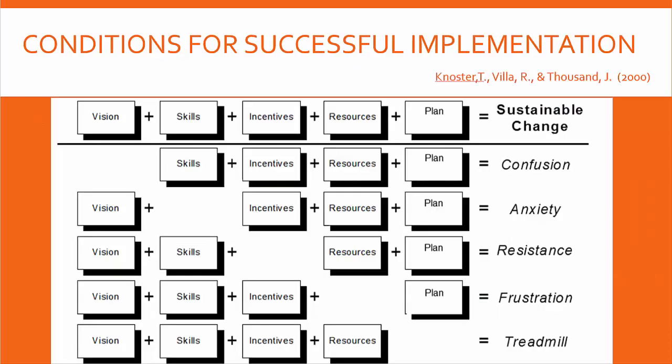Let's take a look at the conditions that are necessary for successful change implementation. If we want change to happen without confusion and to work great, these are the things we need to have in place: a clearly communicated vision, skills, incentives, resources, and a plan. If we can have all of those things together, we can create sustainable change.